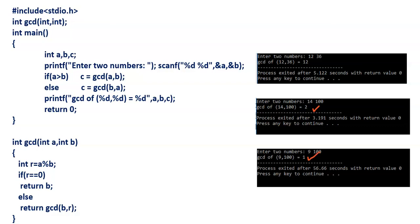This is the code. First of all, we read two numbers and then we find out the biggest number. If A is the biggest number, then we call GCD of A, B. Otherwise, we call GCD with first argument B and second argument A, because we always pass the biggest value as the first argument and the smallest value as the second argument. Then we print the GCD value.